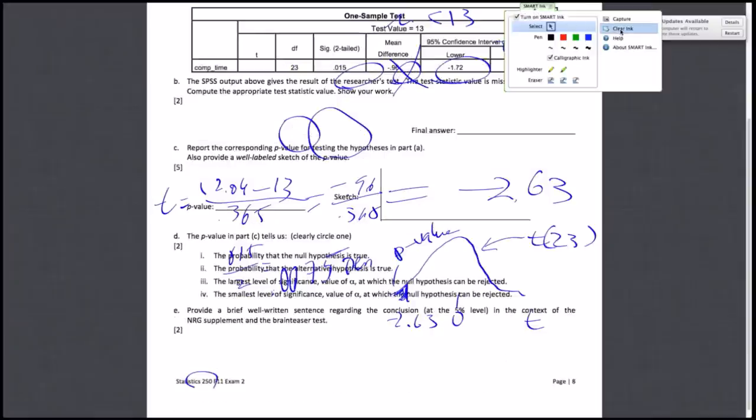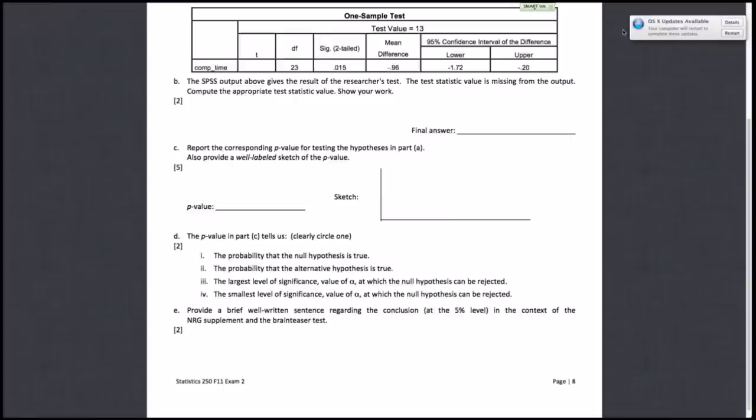Now we'll move on to the last part, part E. It wants you to provide a brief, well-written sentence regarding the conclusion at the 5% level in the context of the energy supplement and brain teaser test. You have your p-value of 0.0075 and significance level of 5%. Obviously, you would reject the null hypothesis because the p-value is much smaller than 0.05.